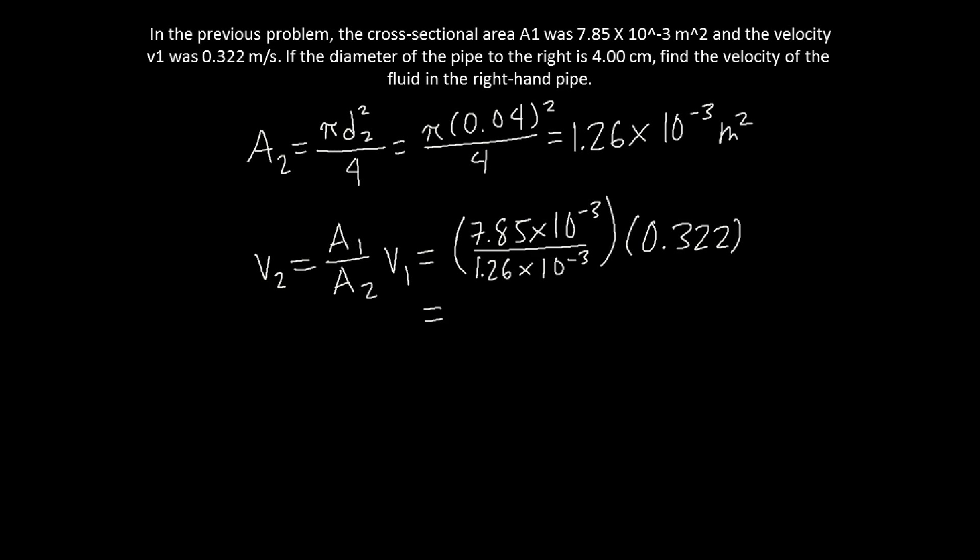And this is now equal to 2.01 meters per second. So the fluid velocity increased more than 6 times when it flowed through the constricted pipe. Thanks for watching. I hope you learned a lot, and we're going to cover Bernoulli's theorem in our next video.